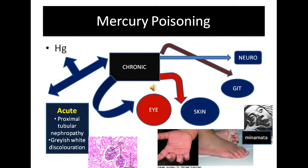In chronic poisoning, it affects quite a few systems — it affects the eye, the skin, the GIT, and most importantly, the nervous system. In the eye, it leads to mercurial lentis, where there is a brown deposit in the anterior lens capsule. In the skin, it leads to acrodynia or pink disease, which chiefly affects the hands and the feet.